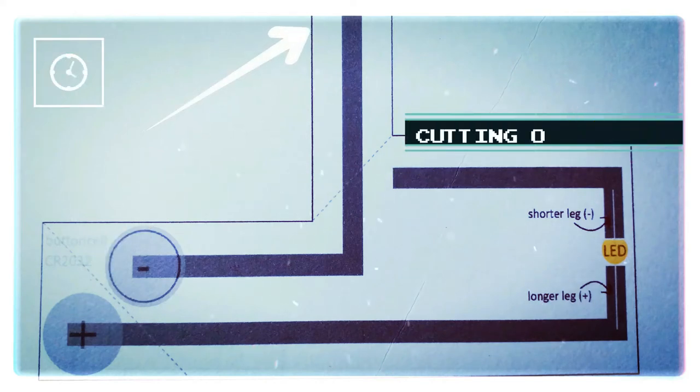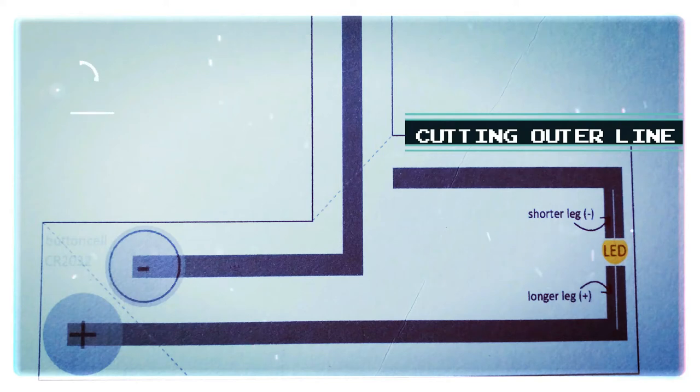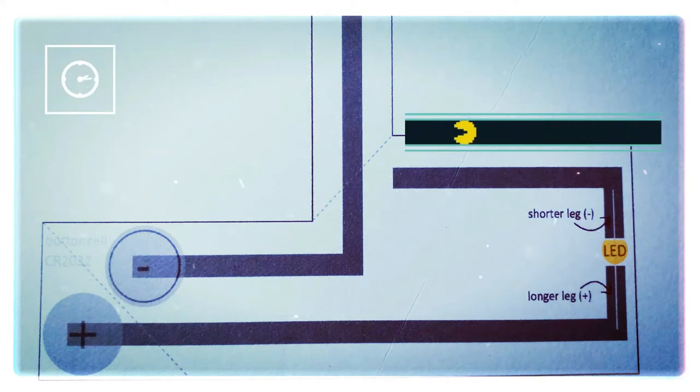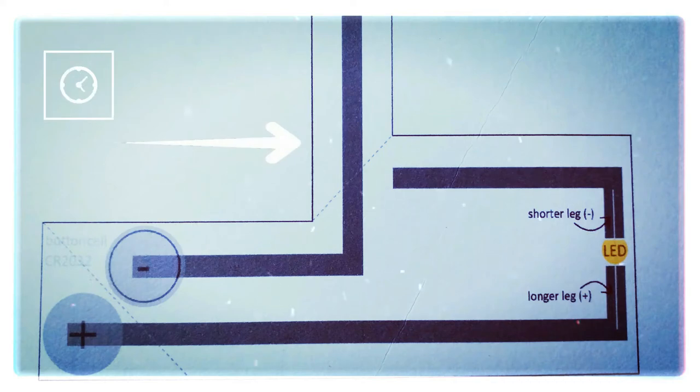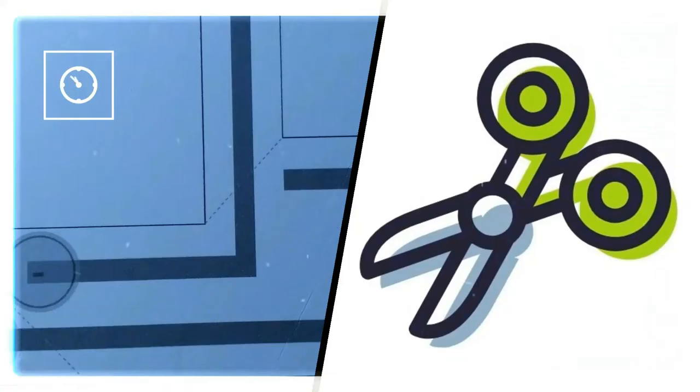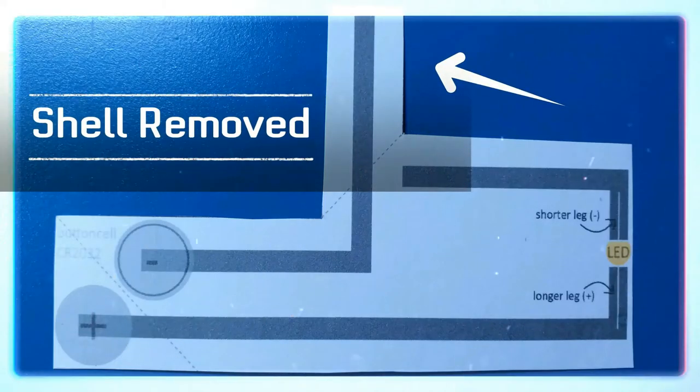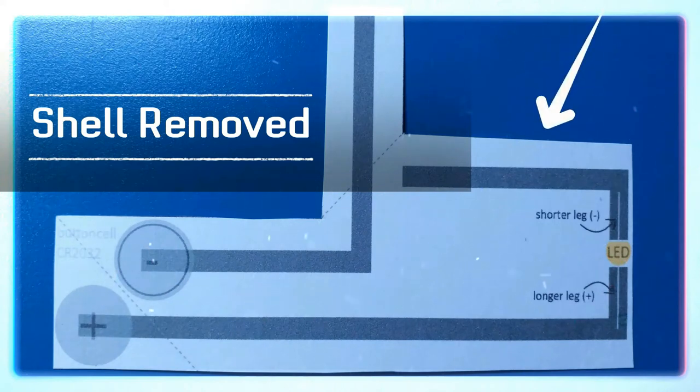Now we cut this template with the help of a scissor from the very outer line that is the protection shield. As you can see, we have scissored out the circuit template by cutting it out from the outer line. Now this circuit template is ready for use.